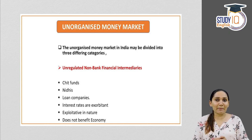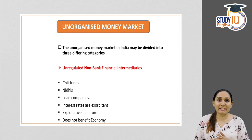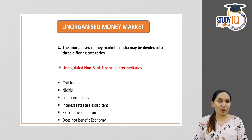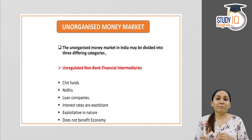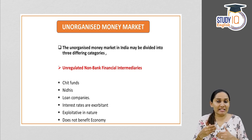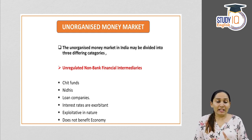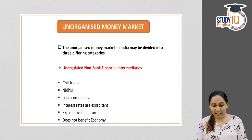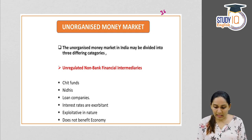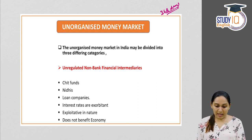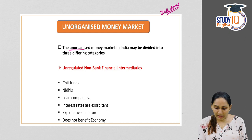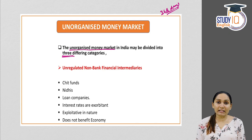Today we will be discussing about two segments of money market: organized money market and unorganized money market. Money market deals with financial instruments with a maturity period of less than one year — maximum maturity period is 364 days. Coming to unorganized money market in India, it may be divided into three different categories.